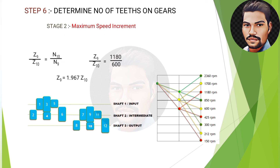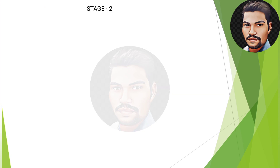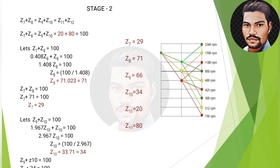After calculating using the formula, Z12 = 80 teeth. For gears 9 and 10, applying the same formula gives Z9 = 1.967 × Z10. Similarly, teeth are calculated for gears 7 and 8. The final number of teeth at stage 2 are: gear 7 = 29, gear 8 = 71, gear 9 = 66, gear 10 = 34, gear 11 = 20, gear 12 = 80.